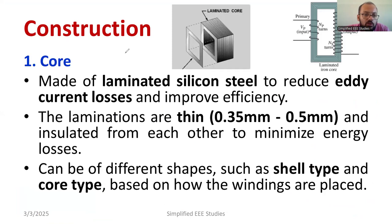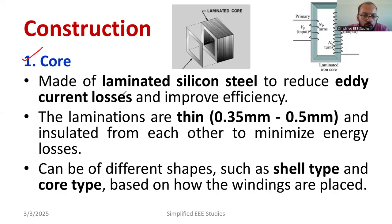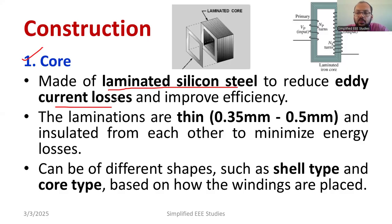First, I would like to discuss the transformer core. The transformer core ensures the movement of magnetic flux. Usually, the transformer core is made up of silicon steel. The main purpose is to minimize the eddy current loss. Apart from that, silicon steel has a very low value of hysteresis, so hysteresis loss will also be very low.